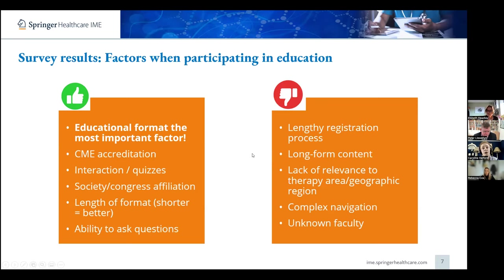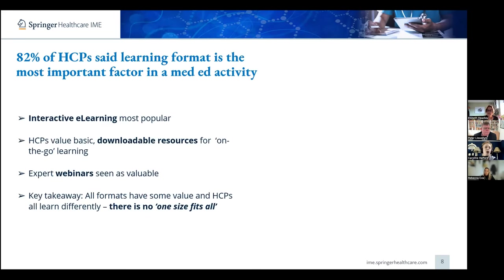If there was an unknown faculty — if they did not recognize the experts leading the program — that was also a big deterrent. So thinking about our experts saying that format is the key driver, we really wanted to dig into this more, because 82% said that learning format was the most important factor. When we asked what formats they were most willing to engage with, interactive e-learning was by far the most popular. But conversely, they also very much valued basic downloadable resources for on-the-go, on-demand learning — things like infographics, summaries, or brochures they could download and annotate.